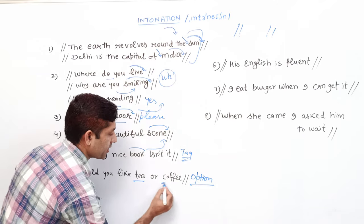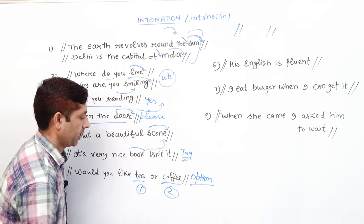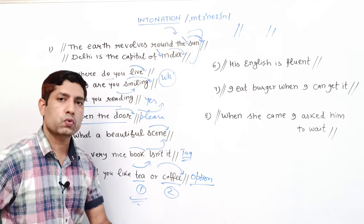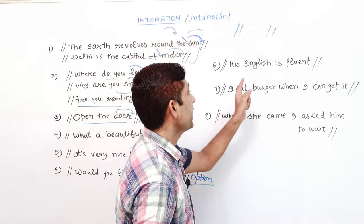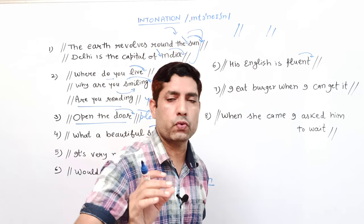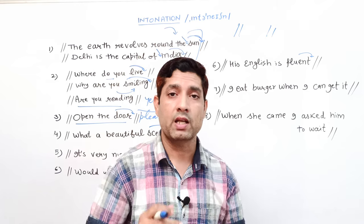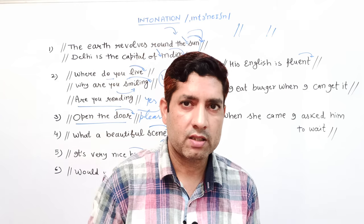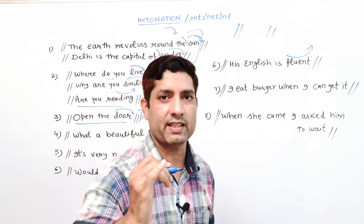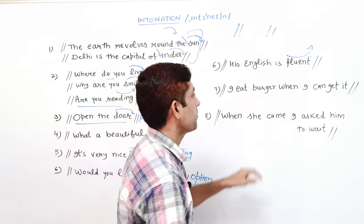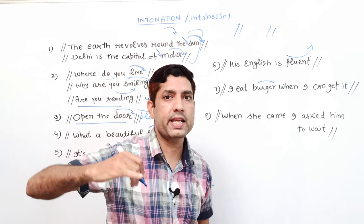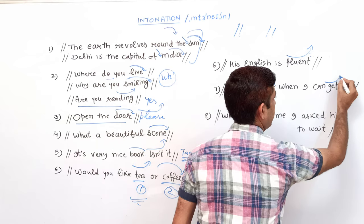'Would you like tea or coffee?' — जब options या choices हों, तो first option पर rising tone और second option पर falling tone रहती है। 'His English is fluent' — simple statement है, तो falling tone। लेकिन यदि intention question करना हो — 'His English is fluent?' — तो 'fluent' पर rising tone हो जाएगी।